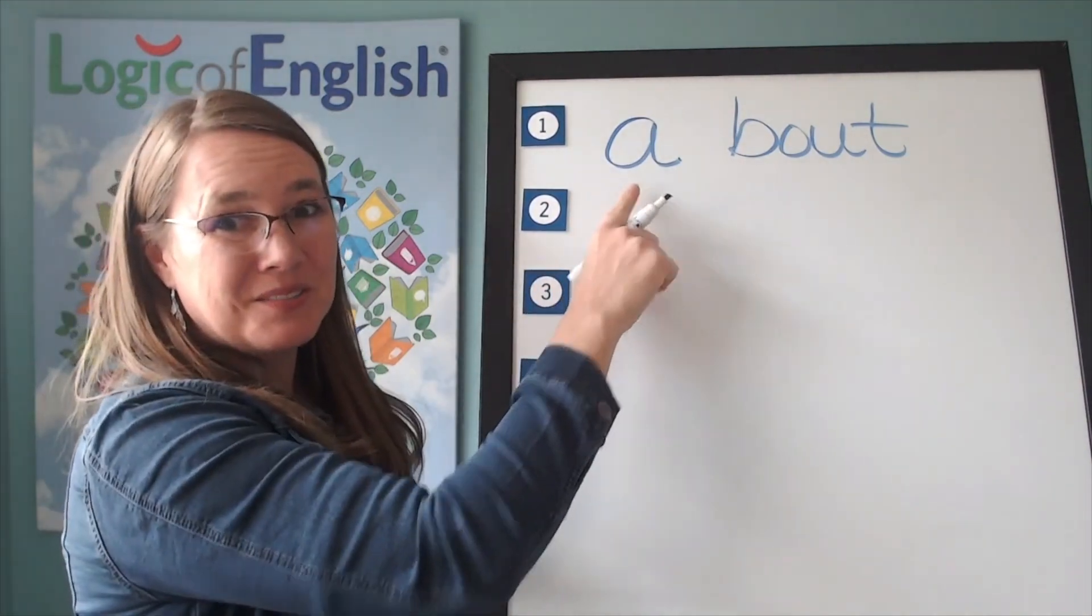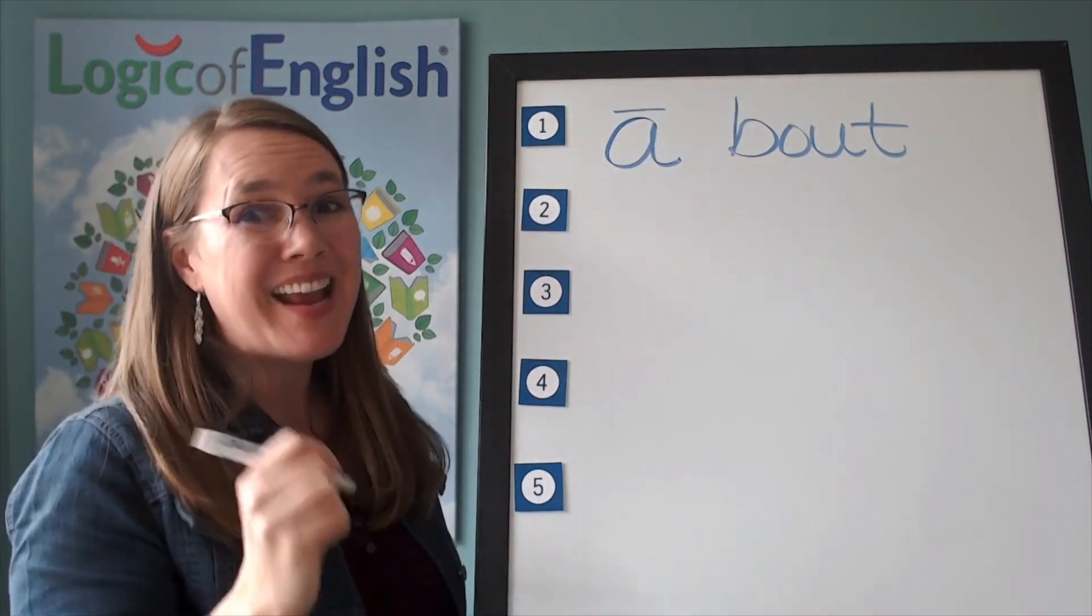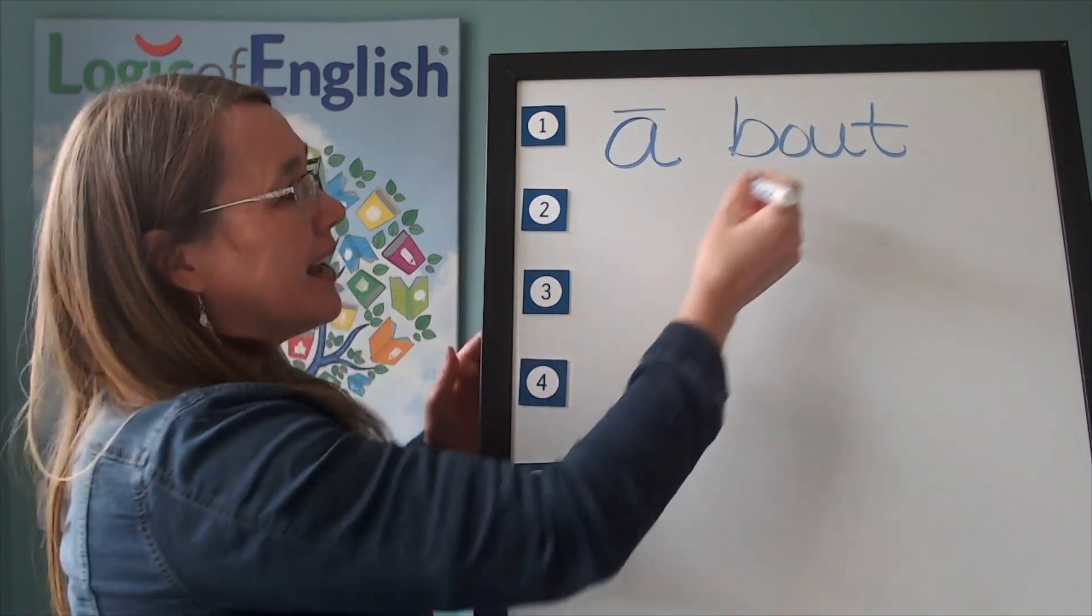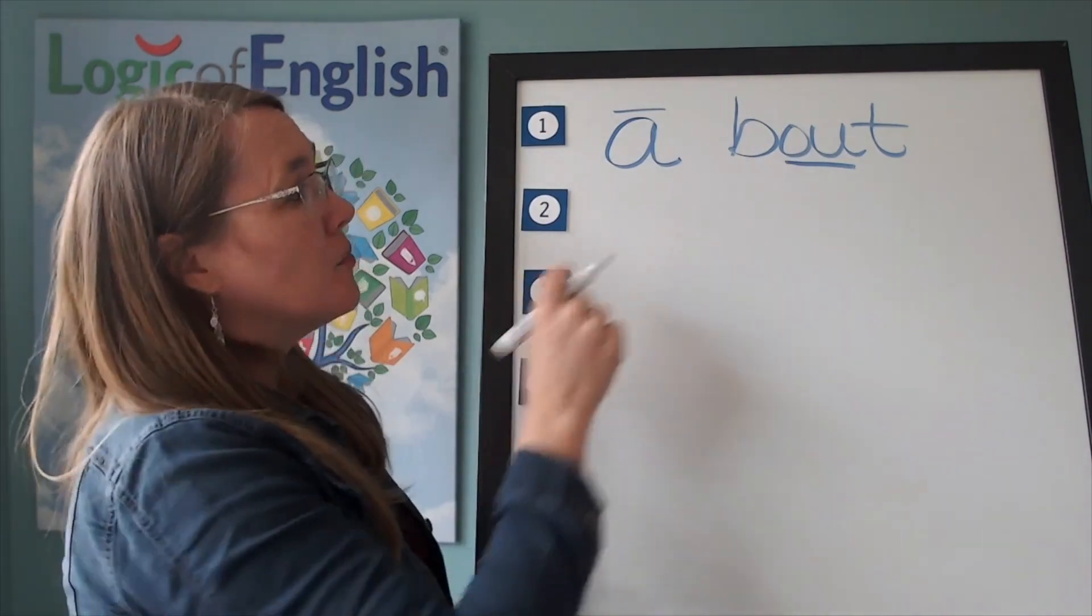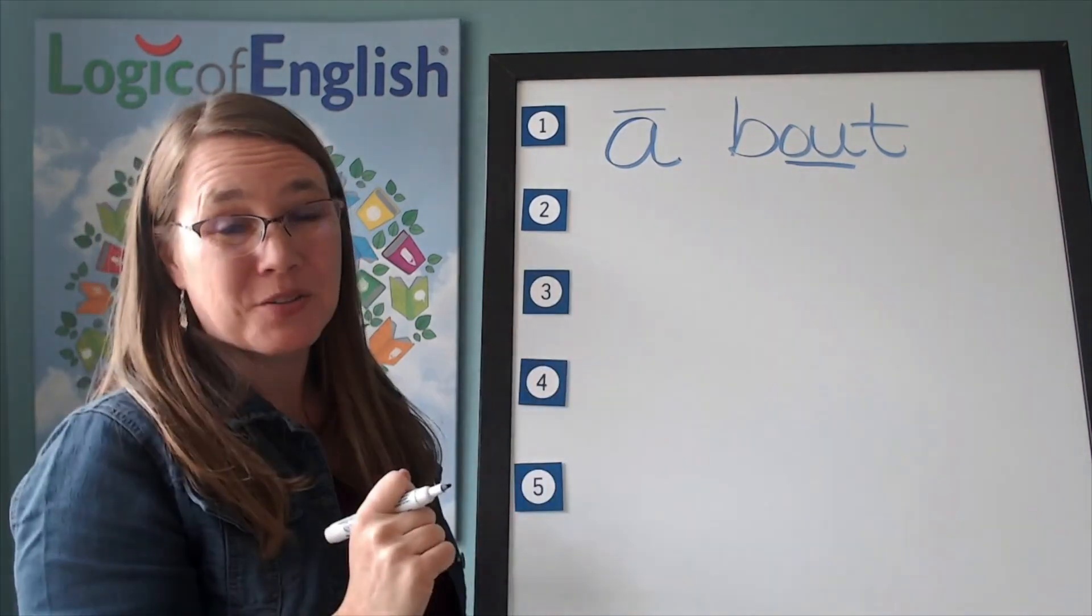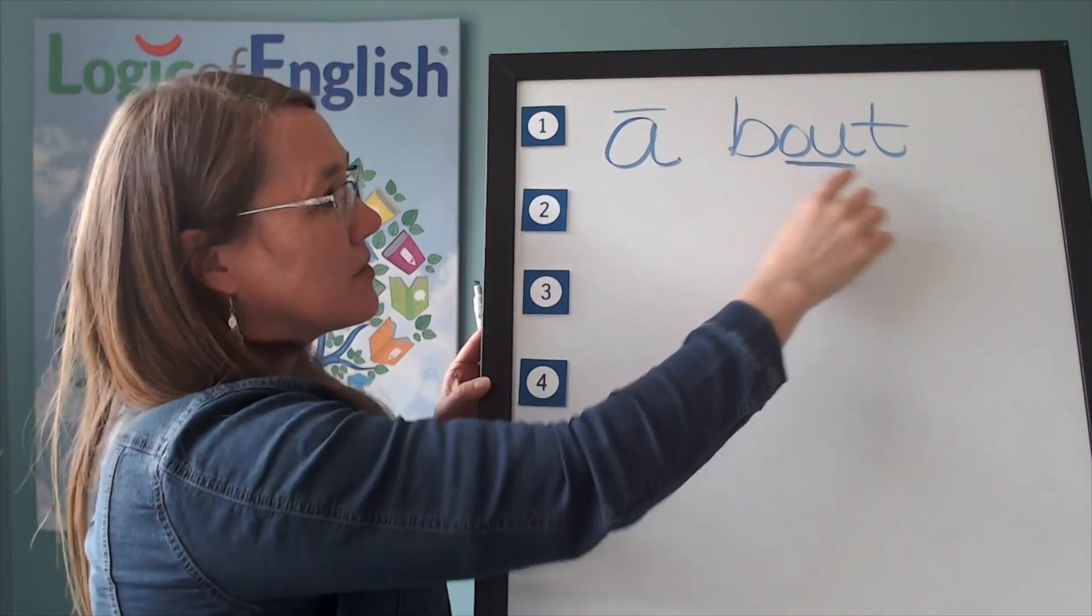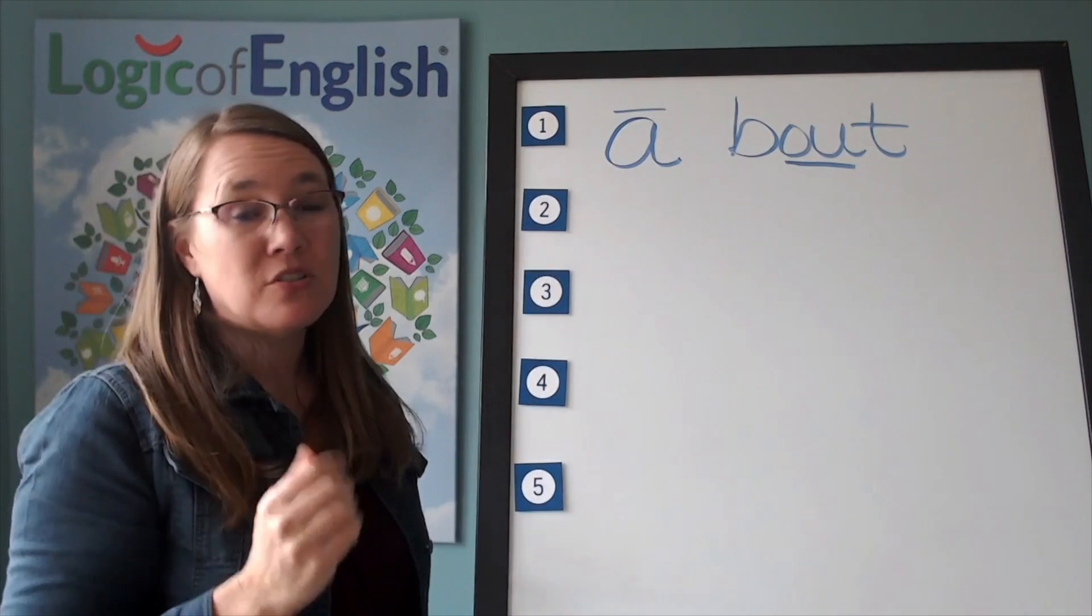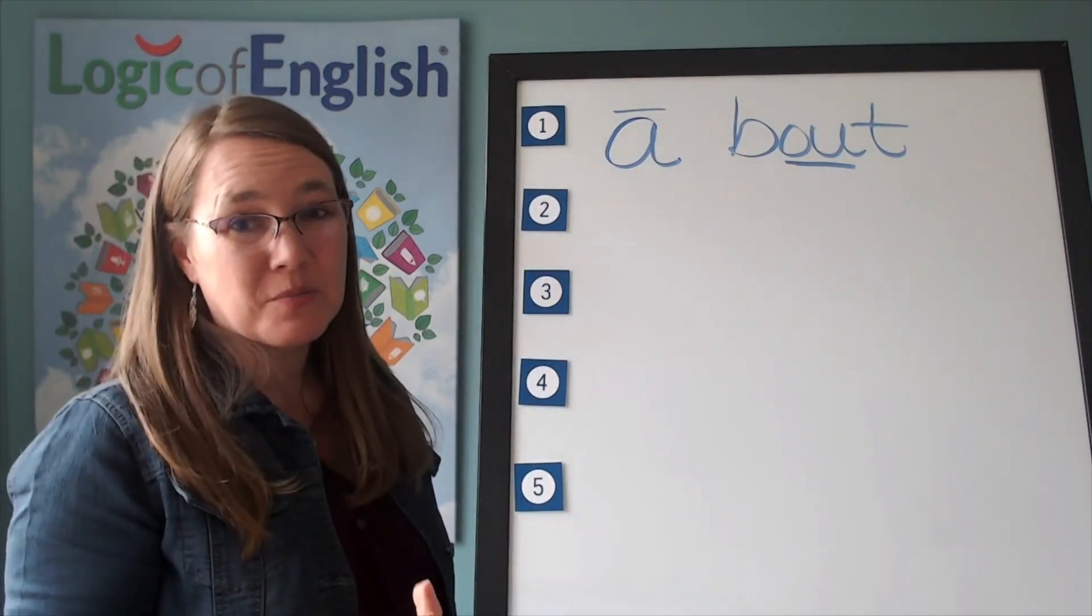Did you write an a here? Very good. How will we mark it? We'll put a line over it. Why? A-e-o-u usually say their long sounds at the end of the syllable. And we'll underline the ow. Did you use the right kind of ow? What sound of ow-o-oo is this? You're right. It's the first sound. Now let's read it. A-bout. About. And what do we say? About. Remember any vowel can say one of its schwa sounds. So any vowel can be lazy.